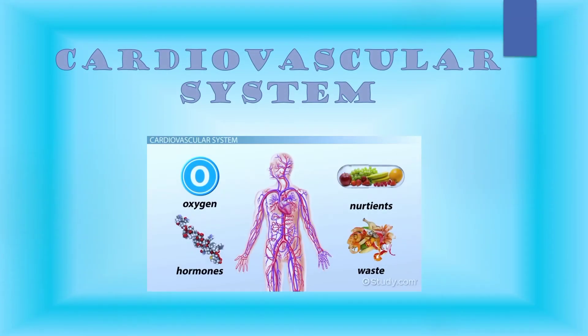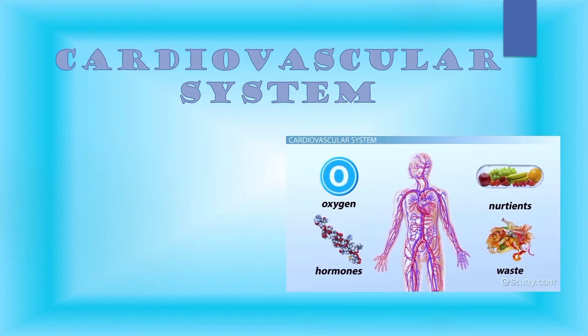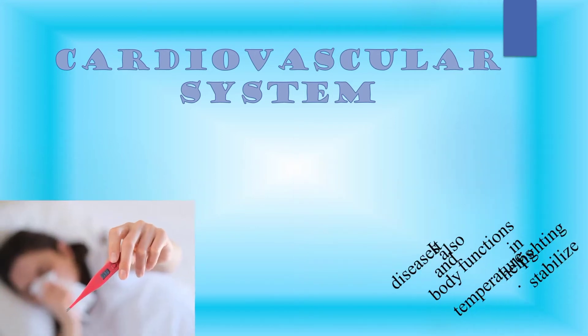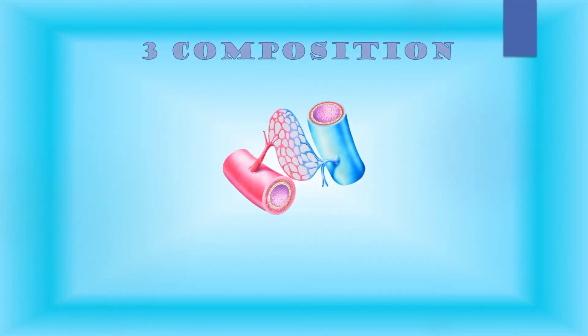The cardiovascular system is the organ system that transports nutrients, gases, hormones, and other materials to and from the cells of the body. It also functions in fighting diseases and helps stabilize body temperature.